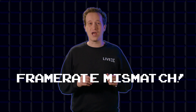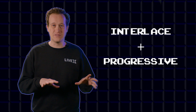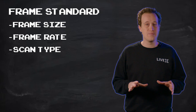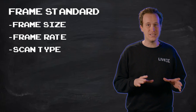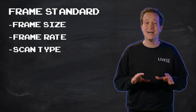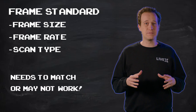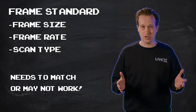You're dealing with a frame rate mismatch. As we covered in our interlacing video, interlaced and progressive videos don't naturally go together. Your switcher is set to a frame standard — the frame size, rate, and scan type of your sources need to match this standard. Frame types that don't match may not work at all in your switcher.